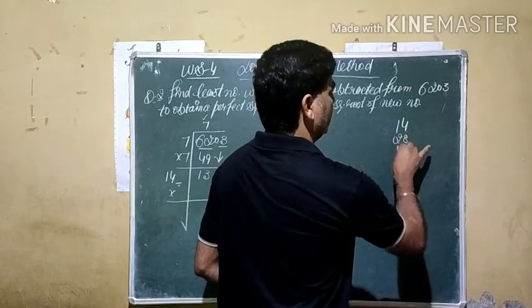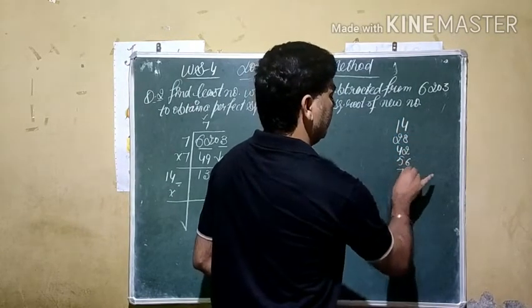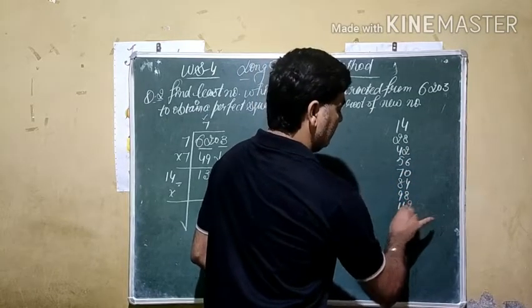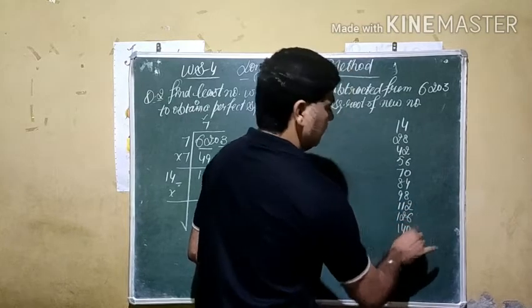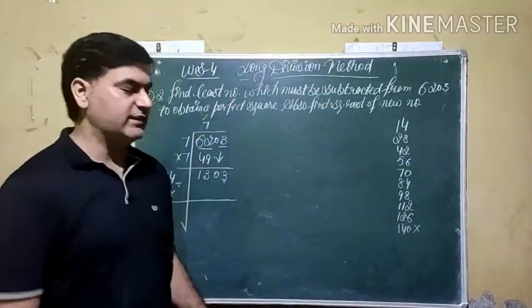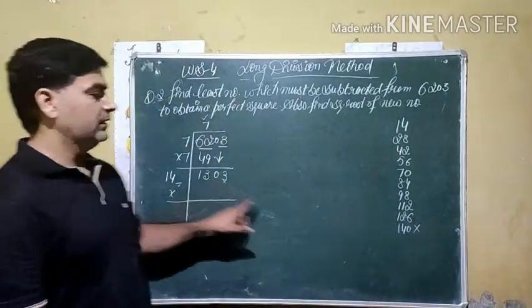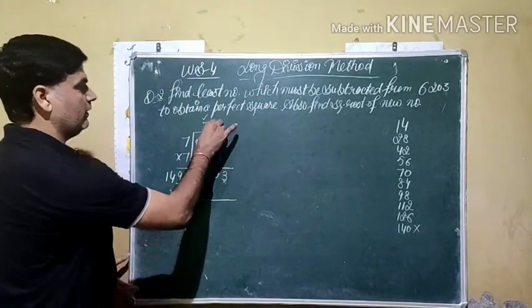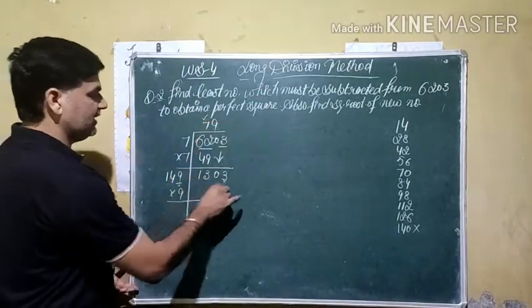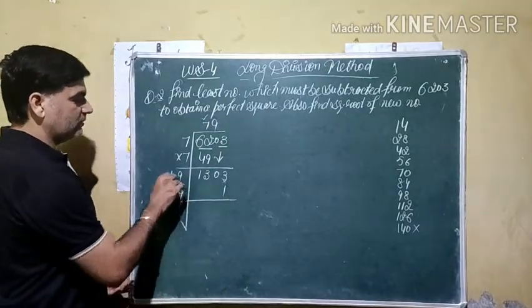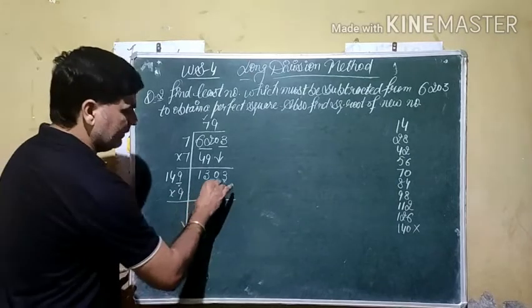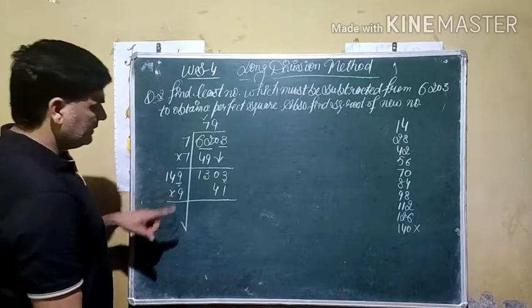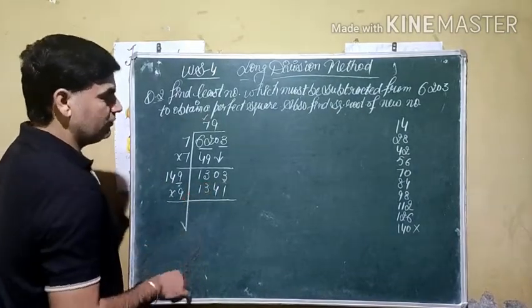In the table of 14, 130 comes. If we see, 14 times 9 is 126, plus 81 gives us 1341. Nine times nine is 81, 8 carry, nine times four is 36 plus 8 carry is 44, 4 carry, nine times one is 9 plus 4 carry is 13. This is bigger.